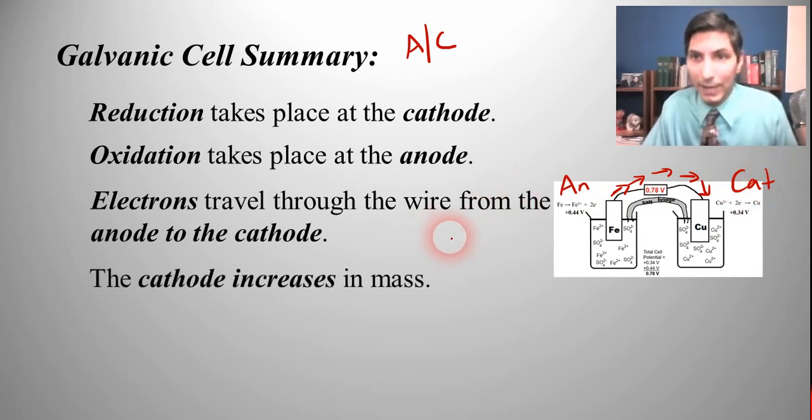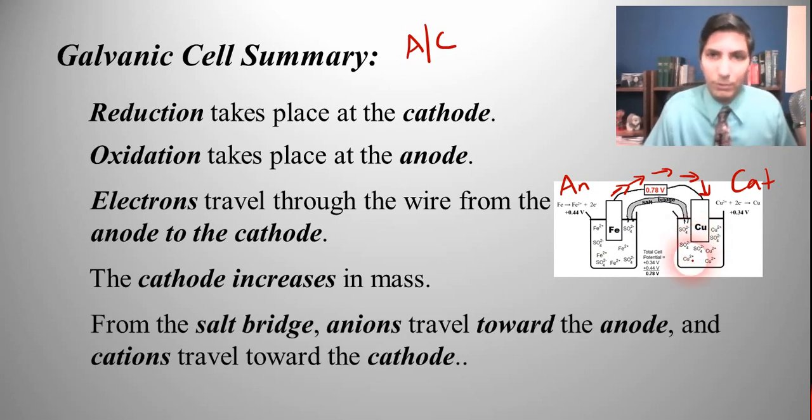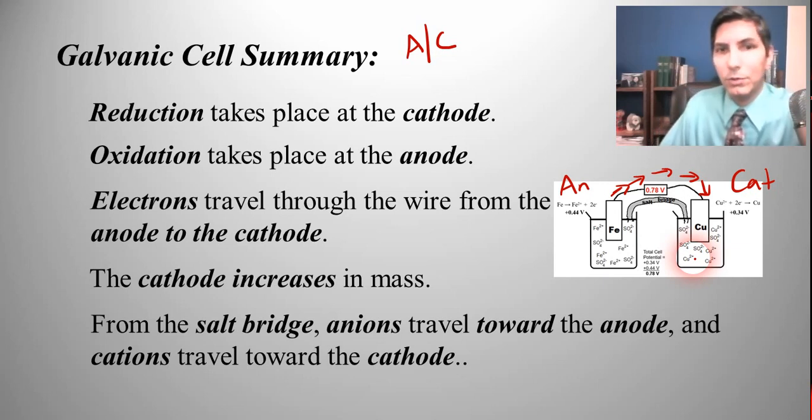The cathode increases in mass. So if this is the cathode, that means that that copper piece over there is going to start to increase in mass. The cat gets fat. From the salt bridge, anions travel toward the anode and cations travel toward the cathode. So that's usually pretty easy to remember.